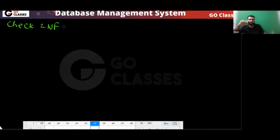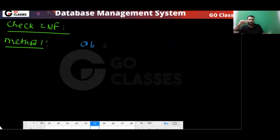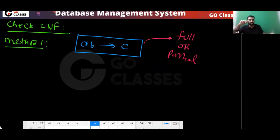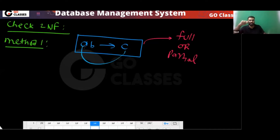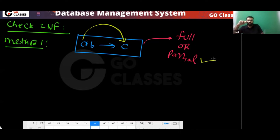Now check 2NF. Look at the FD AB→C — is this full or partial? This FD is partial because you don't need B: A can determine C on its own, so B is not needed. You can remove B and A still determines C. So this dependency AB→C is a partial dependency.